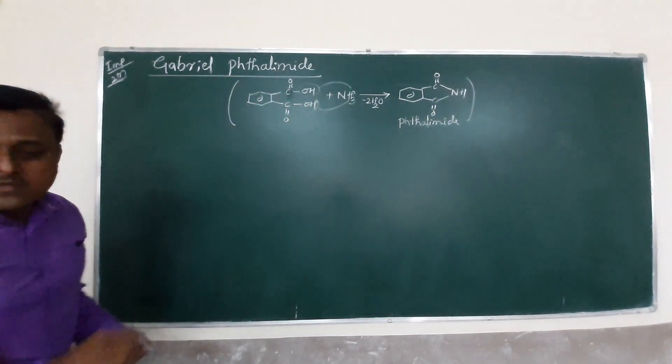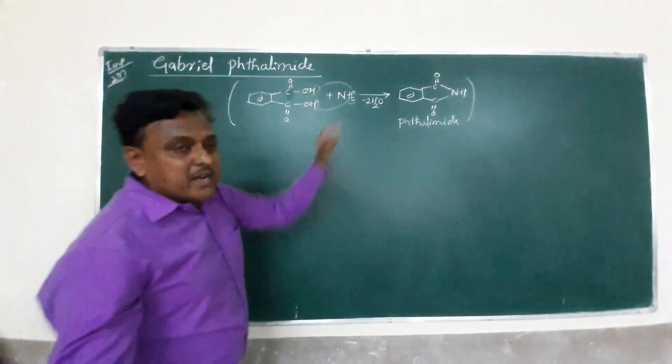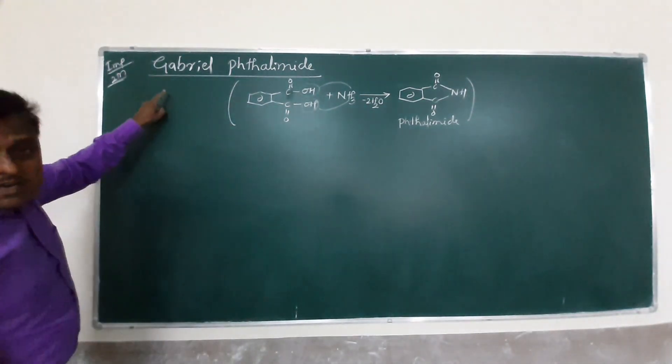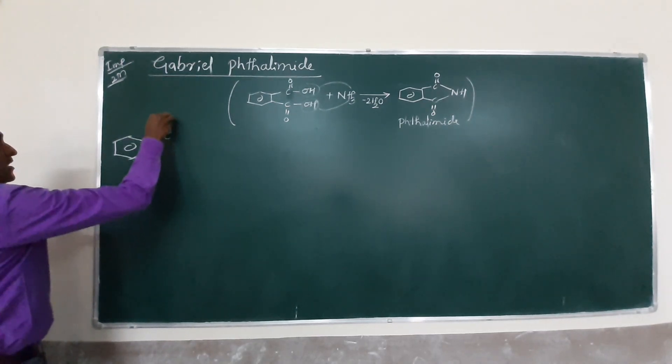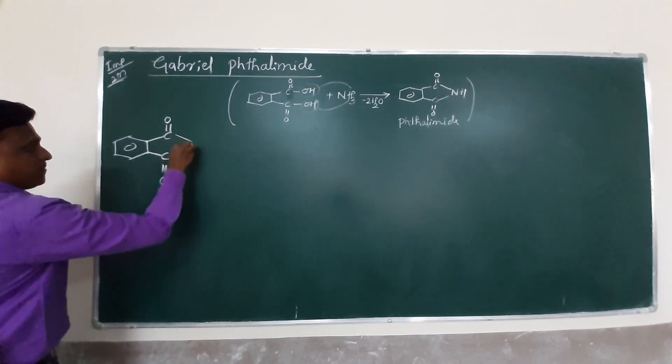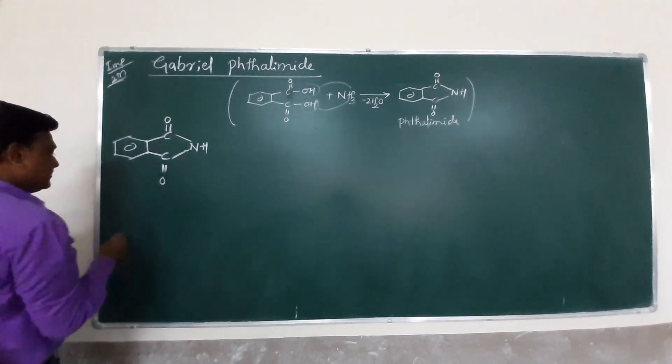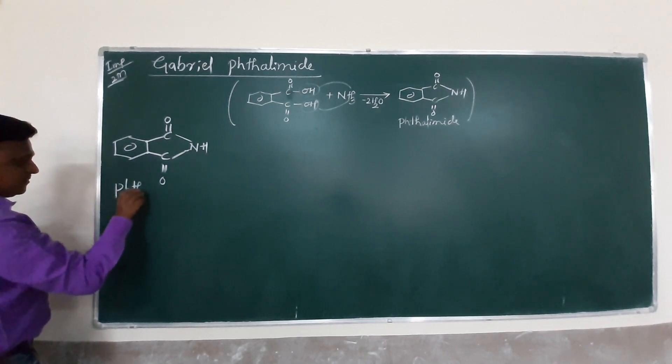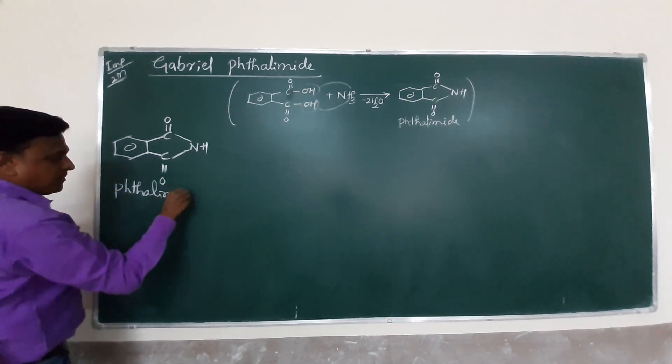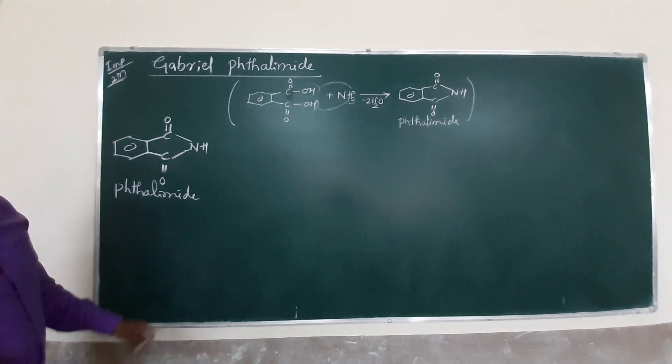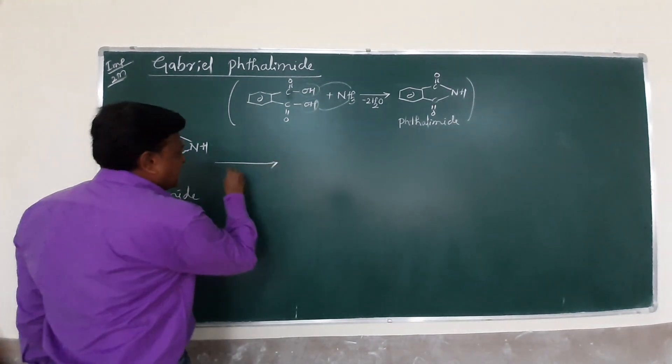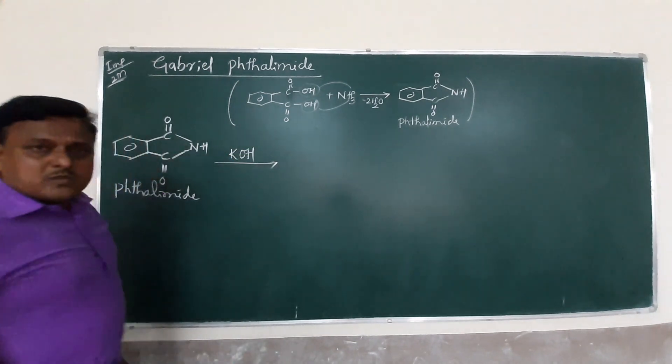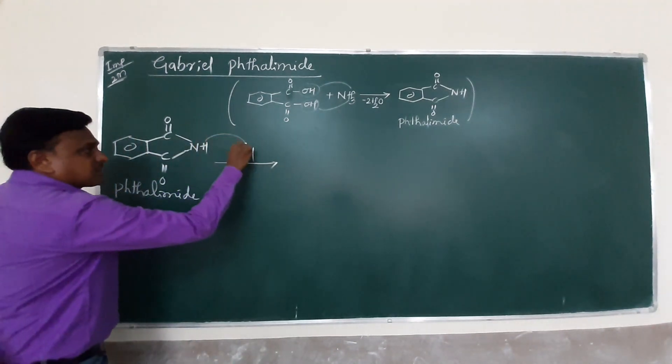By using this phthalimide, how to prepare amines? Very simply start carefully friends. This is phthalimide. When phthalimide reacts with an alkali, once this H is removed and K remains, we call this potassium phthalimide.